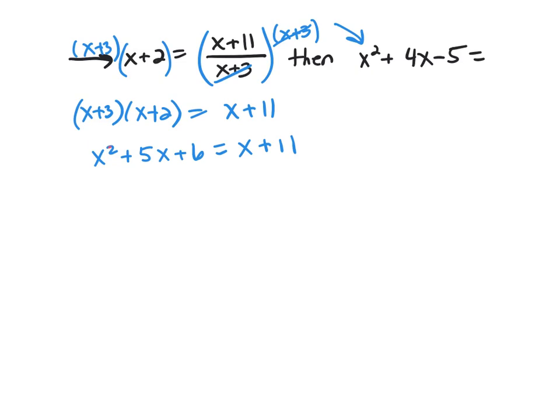This is a quadratic equation. To solve it, you need to get 0 on one side. So I'm going to subtract an x from both sides and subtract 11 from both sides.